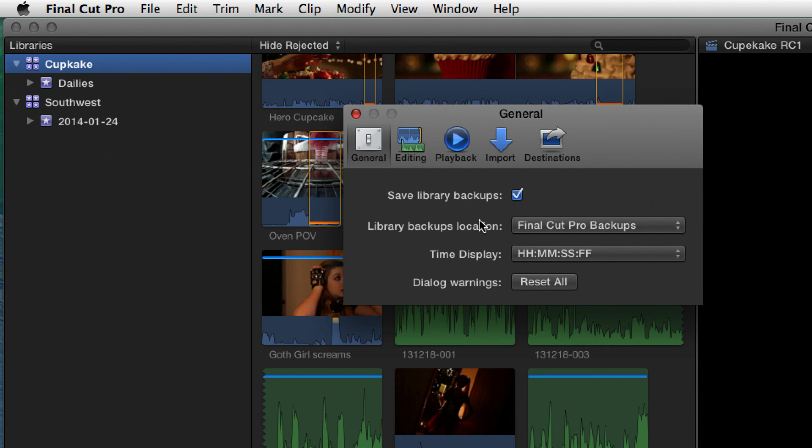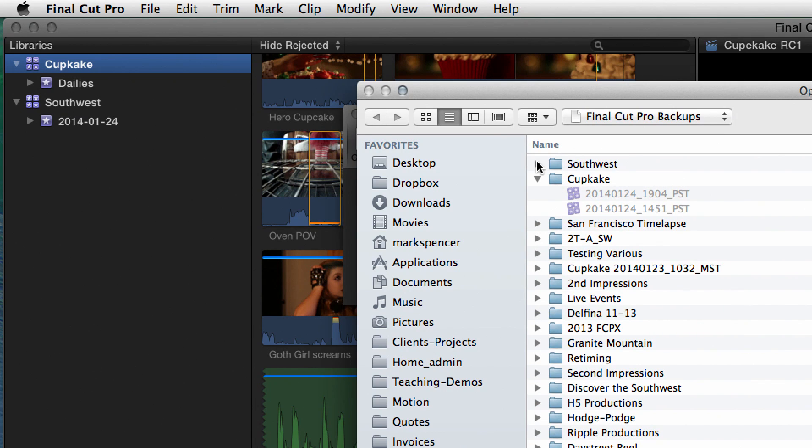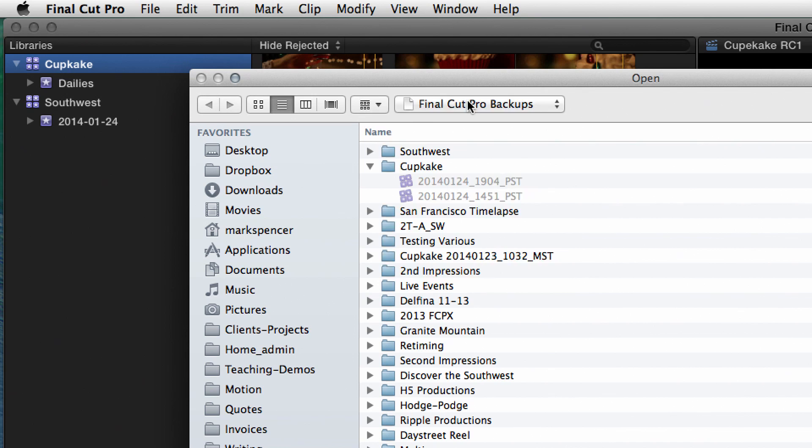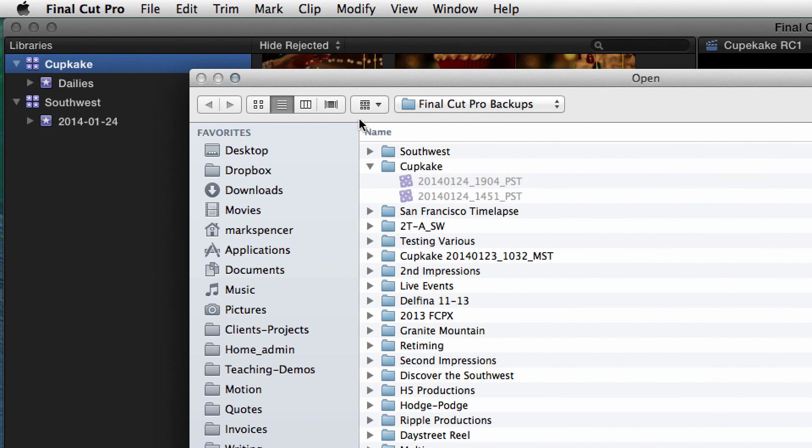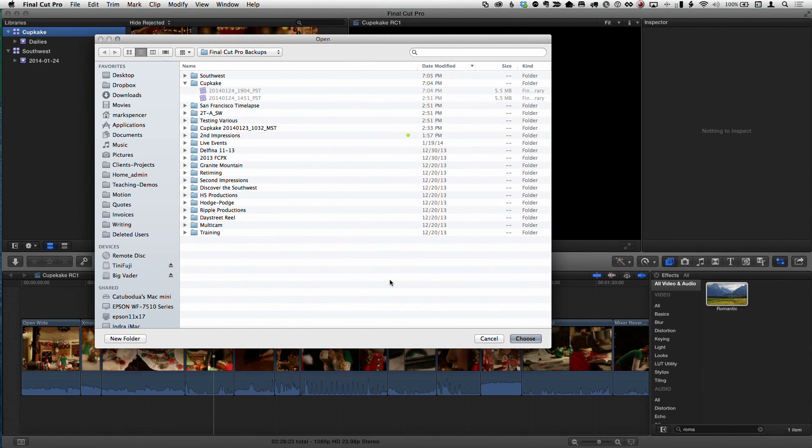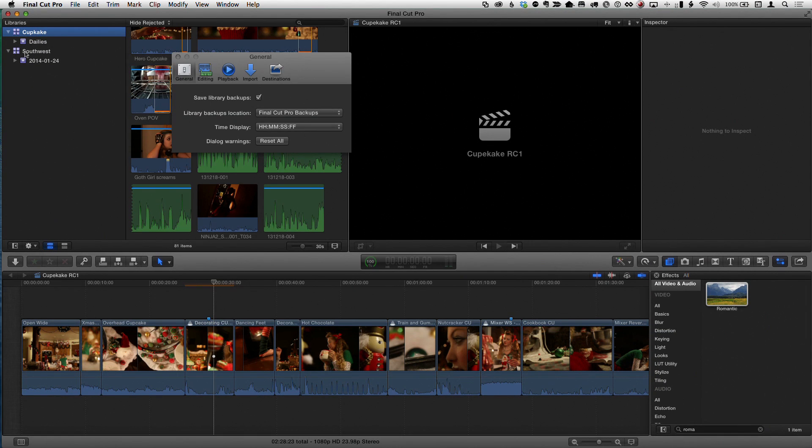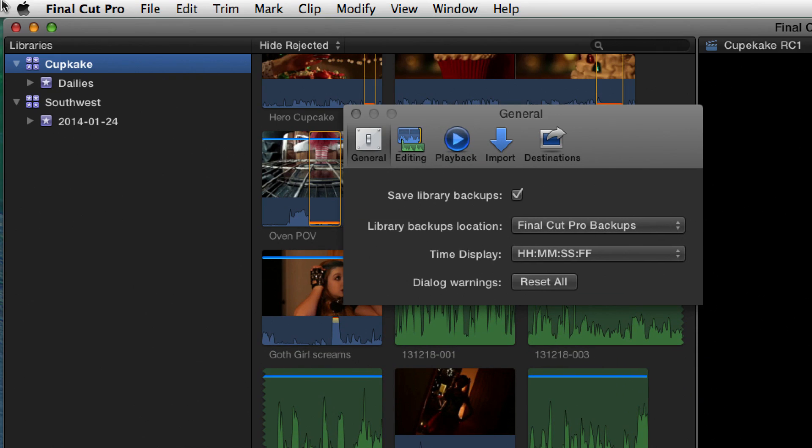If I go to preferences in general, you'll notice here that save library backups is already checked by default. Without you doing anything, just like you said. And it's a good idea to leave that checked, right? That's right. Now, the question is, where is it putting these backups? It's putting them by default in the Users Movies folder, and I can show you this by choosing Choose. I'll come back to this Choose in a moment. But for right now, just so you can see, look at the path. It's in Mark Spencer, Movies, Final Cut Backups.